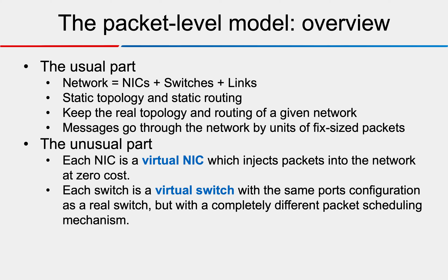For the overview of the packet model, it models the network as links plus switches, assumes static topology and static routing, keeps the real topology and routing of a given network, and messages travel through the network in units of fixed-sized packets. The unusual aspect of this model is that each link and switch is not a real link or switch — it is a virtual link and a virtual switch, quite different from the real ones.